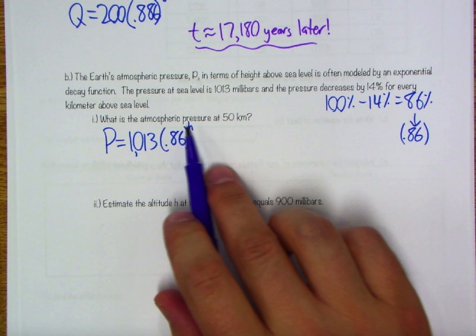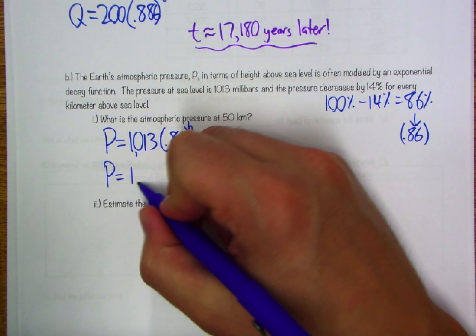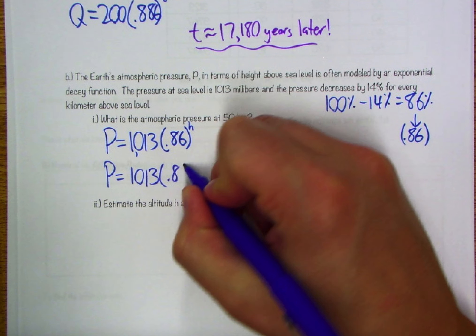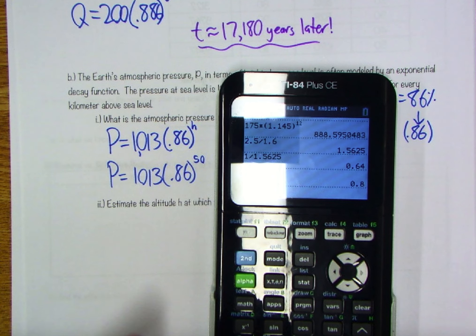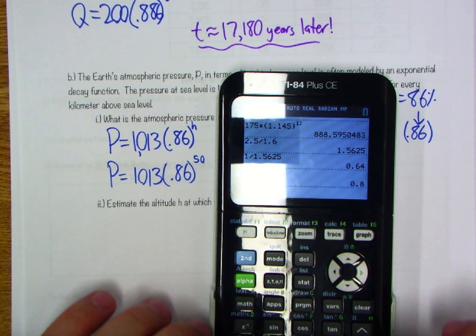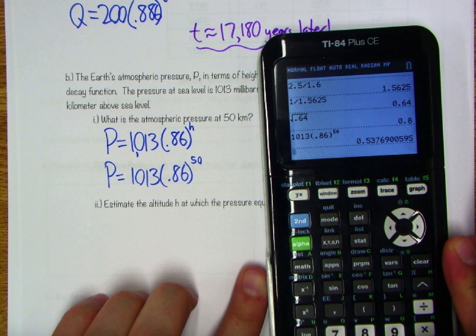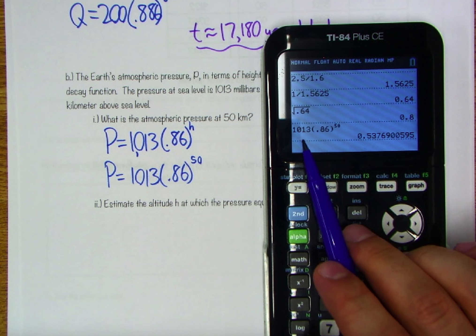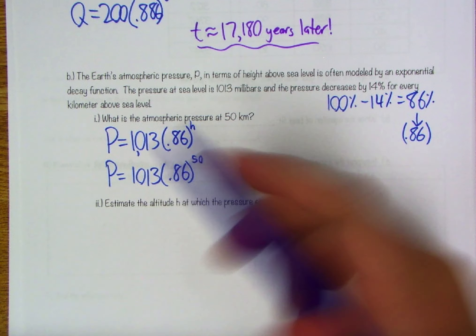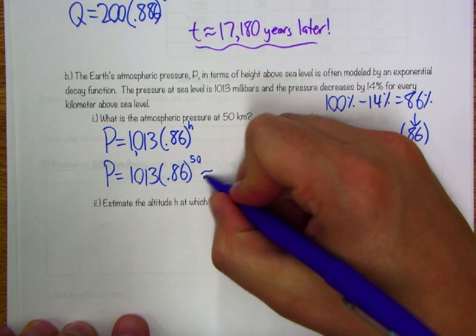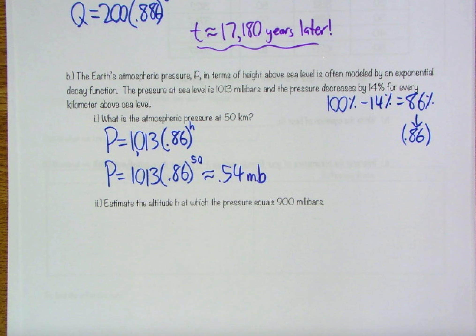So P equals 1,013 times 0.86 raised to the H power, H for height. What is the atmospheric pressure at 50 kilometers? That's when H in kilometers would be 50. P is equal to 1,013 times 0.86 raised to the 50th power. Let's see what we're dealing with here. We went from about 1,013 millibars over to about 0.54. This has decayed quite a bit over these 50 kilometers, so roughly 0.54 millibars.